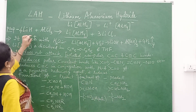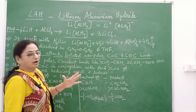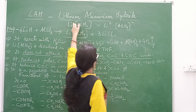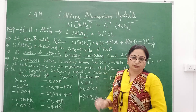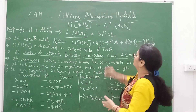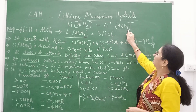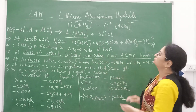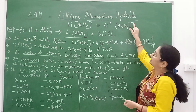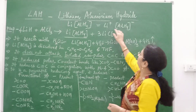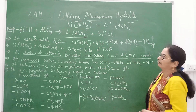Here we have taken the topic LAH. What is LAH? The full form of LAH is lithium aluminium hydride, LiAlH4. You can see it is a complex compound — it actually contains a positive lithium ion and AlH4 as a negative ion. It is also called lithium tetrahydridoaluminate.